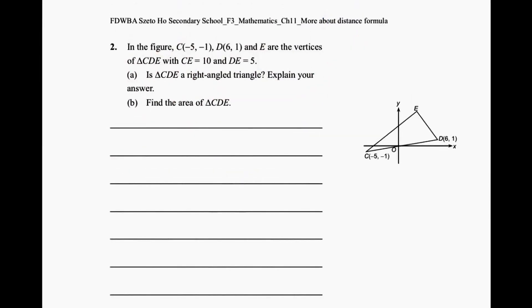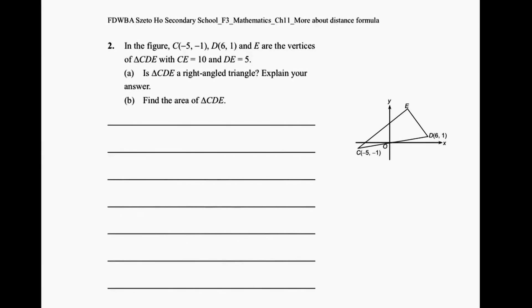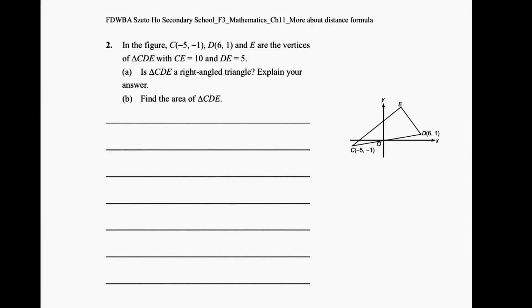Question number 2. In the figure, C, D, and E are the vertices of triangle CDE with CE equals to 10 and DE equals to 5. Is triangle CDE a right-angled triangle? Explain your answer. First of all, since we don't know the length of CD, we can find the length of CD first.